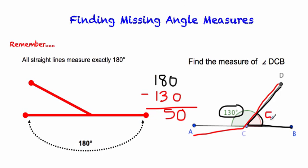That means that the angle measure of DCB is 50 degrees. Now, again, we just had to know and realize that a straight line is 180 degrees, and we can use that to solve for our missing angle.